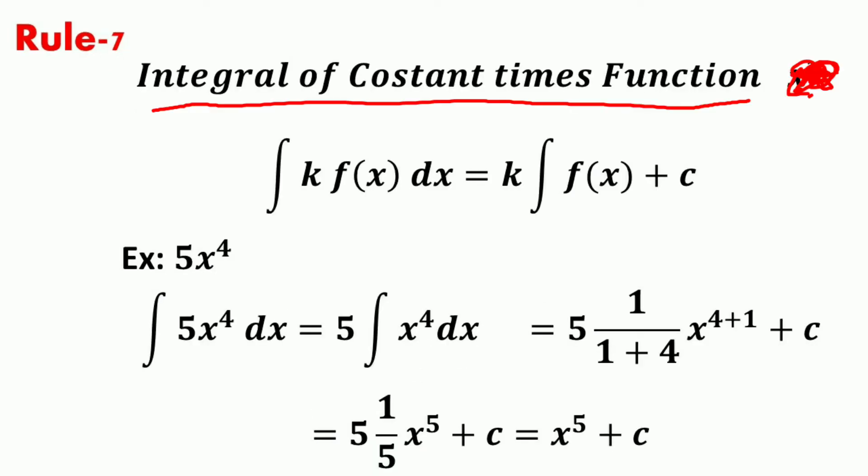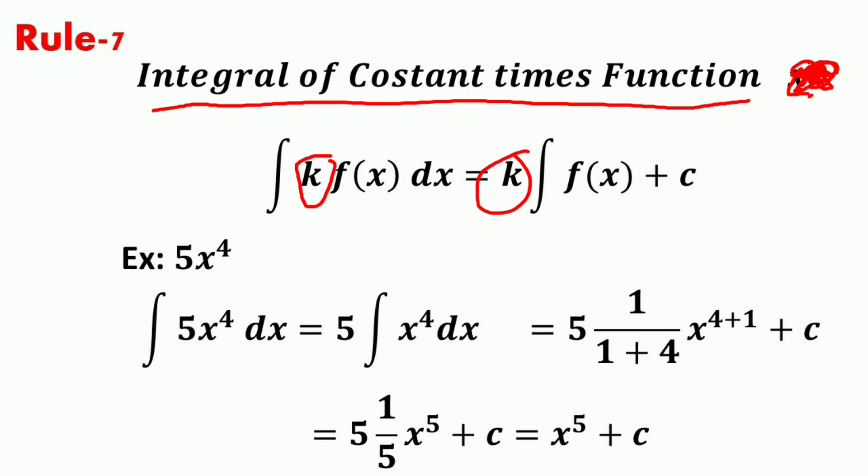The constant multiple rule for integration states that the integral of a constant times a function is equal to the constant times the integral of the function. This rule tells you that it is okay to move the constant outside of the integral before you integrate. That is, the integral of k·f(x) dx is equal to k times the integral of f(x) dx plus c.